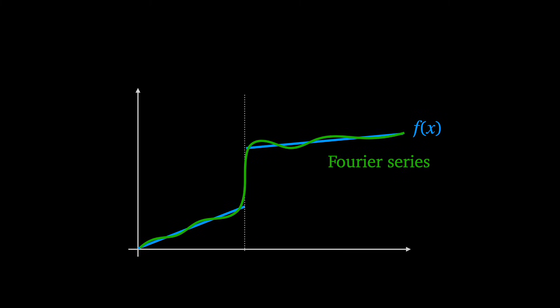Then in 1829, he found the answer. If some piecewise continuous function f of x has a discontinuity at the point x₀, then its Fourier series converges to the average of the limit as f of x approaches x₀ from the left and from the right. Dirichlet then went on to question what kind of function doesn't fit the criteria of piecewise continuous — one not continuous on any interval, and one that Fourier series wouldn't work for.